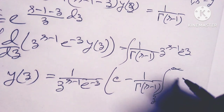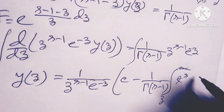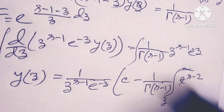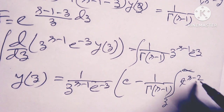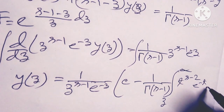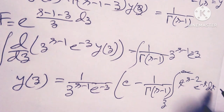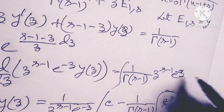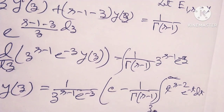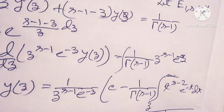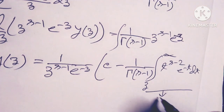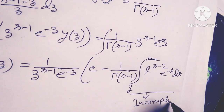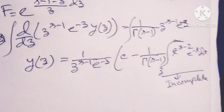The integral from z to infinity of t to the power (s minus 2) times e to the power (minus t) dt is the incomplete gamma function. So this expression involves the incomplete gamma function.